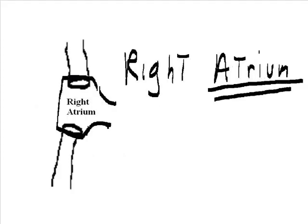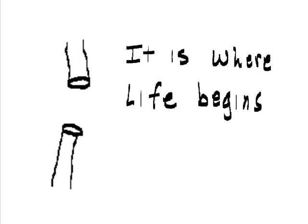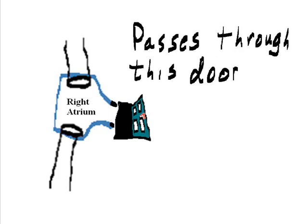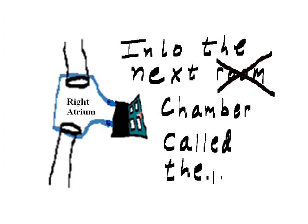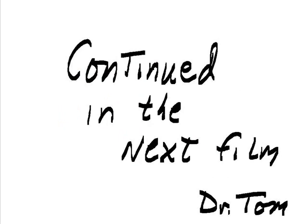The right atrium. The atrium of the heart is its core — it is where life begins. Blood fills up this right atrium and then passes through this door, which we will talk about very soon, into the next chamber called the right ventricle. And finally, the left ventricle.